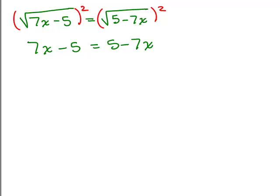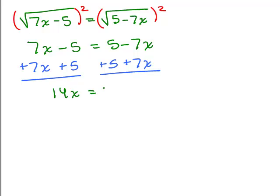So now to solve this, we need to get the variables on one side, constants on the other, because it's linear. There's no x squared term, so let's add 7x to both sides and add 5 to both sides. We get 14x equals 10. Divide both sides by 14, so we get x equals 5 sevenths.